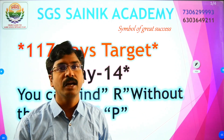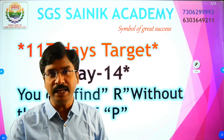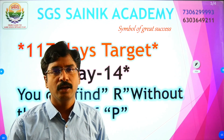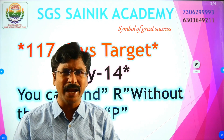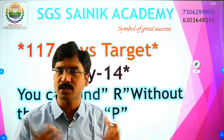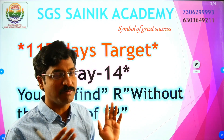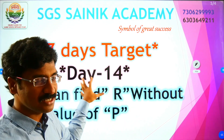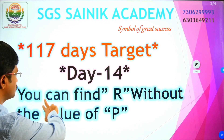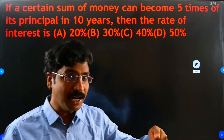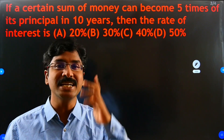These 117-day target questions follow a different path to success, because in the final examination there will be many twists. You have to use your brain very quickly within a short time. That is why I want to tell you the secrets of success — that is why these targets are here for you. Today, Target Number 14: you can find out R, the rate of interest, without the value of P, the principal.